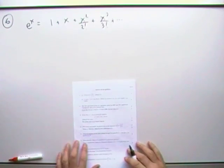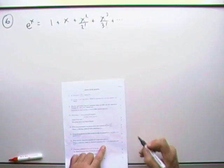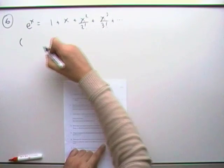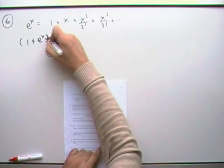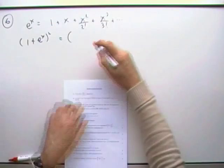It says, oh I've lost the place again. Hence write down the expression for 1 plus e to the x squared. Well, that'll just be that plus 1.